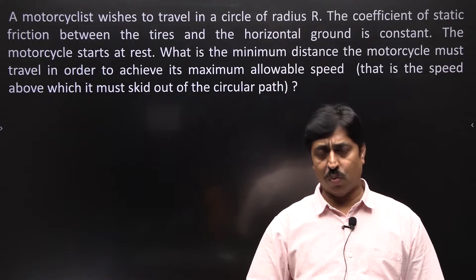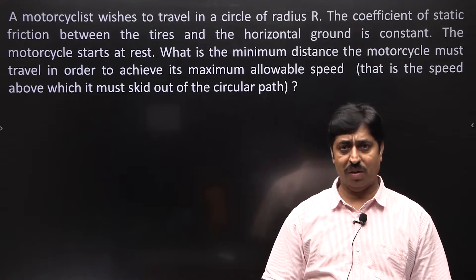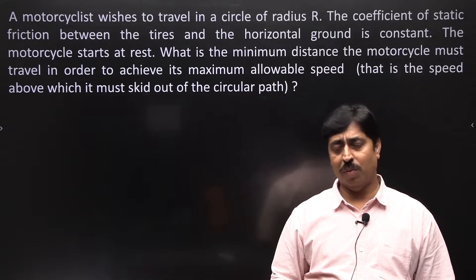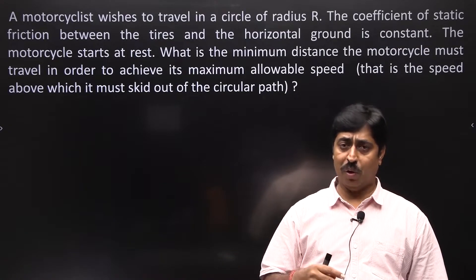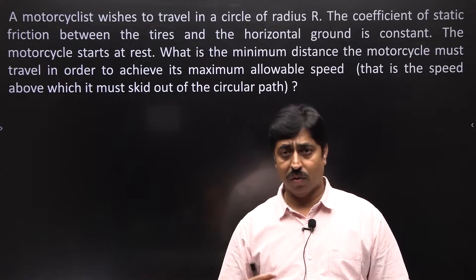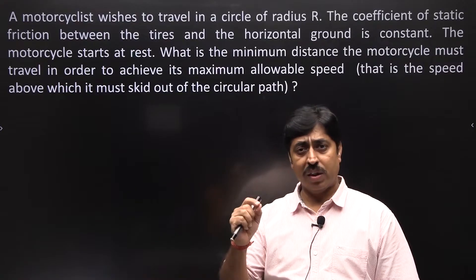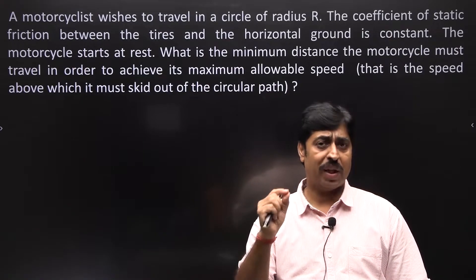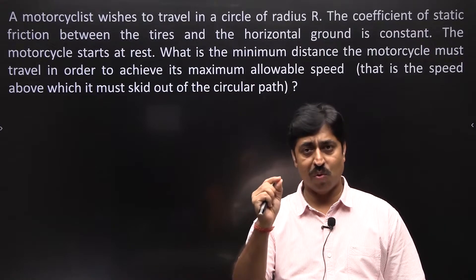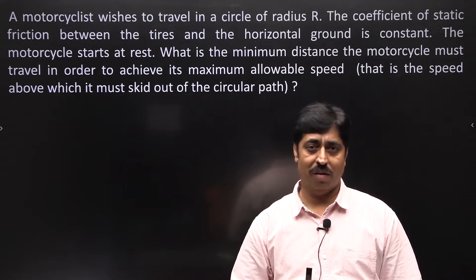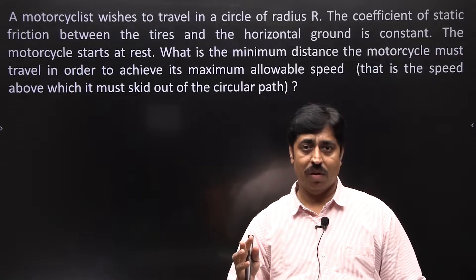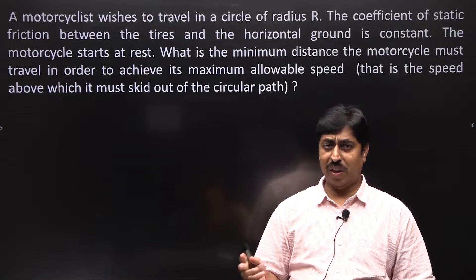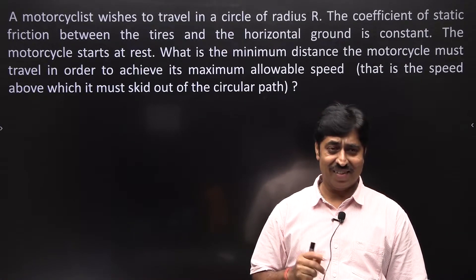There is a circular track on which you want to ride a motorcycle. You start from rest, you go on accelerating, and you all must know that there is a maximum allowed speed beyond which if you try to move you will skid out of the circular track. So what is the minimum distance that you need to travel on that circle to obtain that maximum speed? All of you who want to give it a try please go ahead; for the rest of you I will explain the physical concept first.